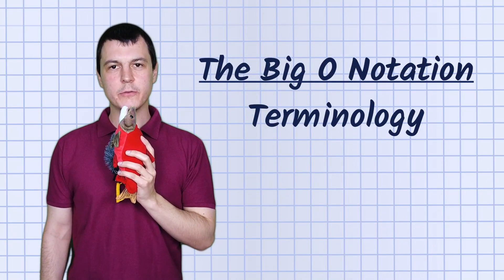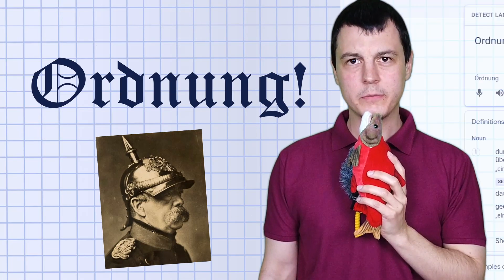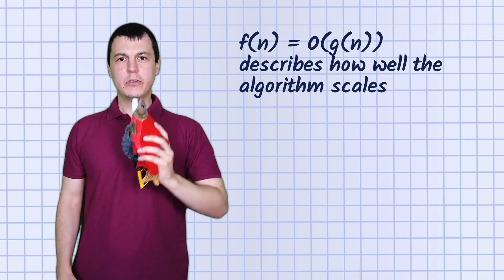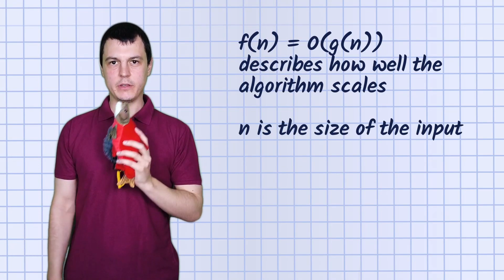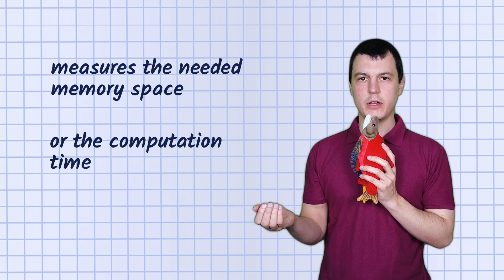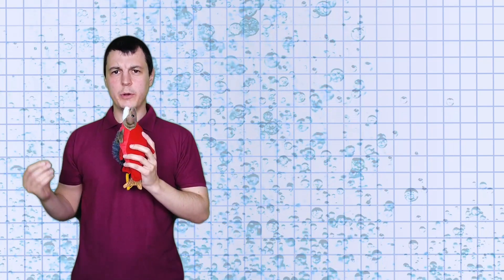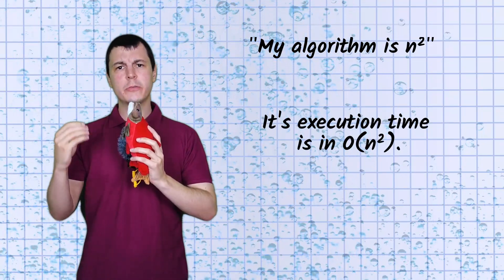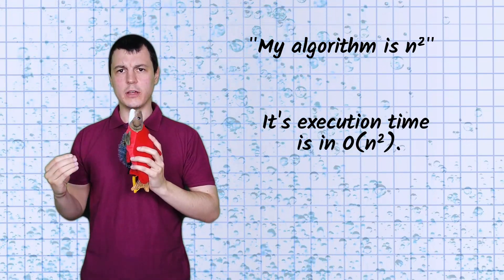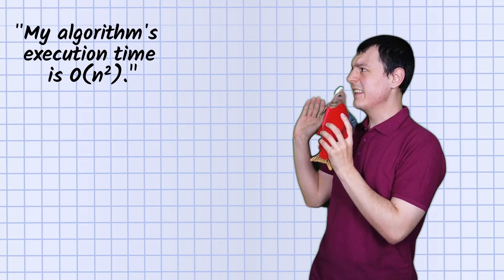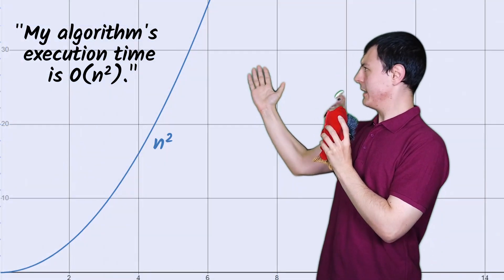In Big O notation, the O stands for Ordnung — or order, German — and it describes how an algorithm scales towards the size of its inputs, either in memory space or in computation time. If someone talks about an N squared algorithm, they usually mean the algorithm's execution time is O of N squared, and one would assume the execution time scales something like that.